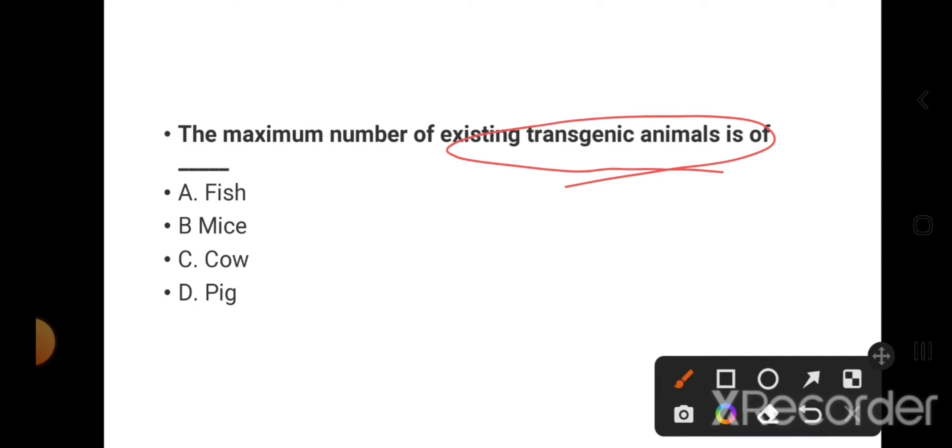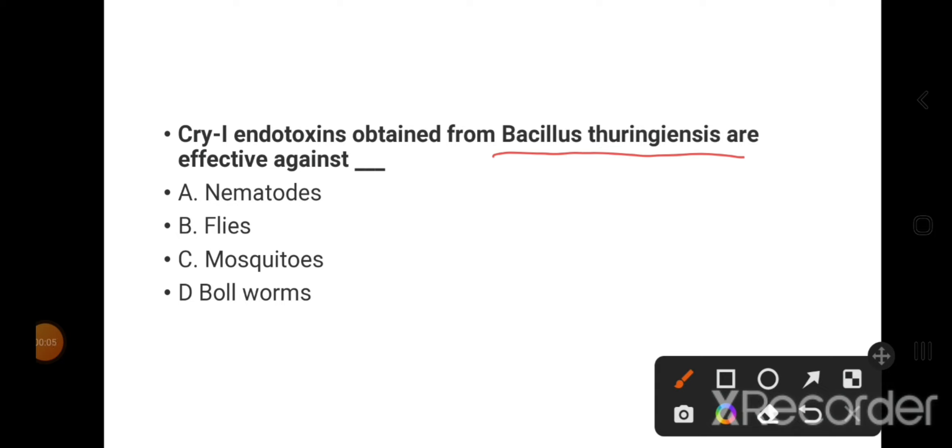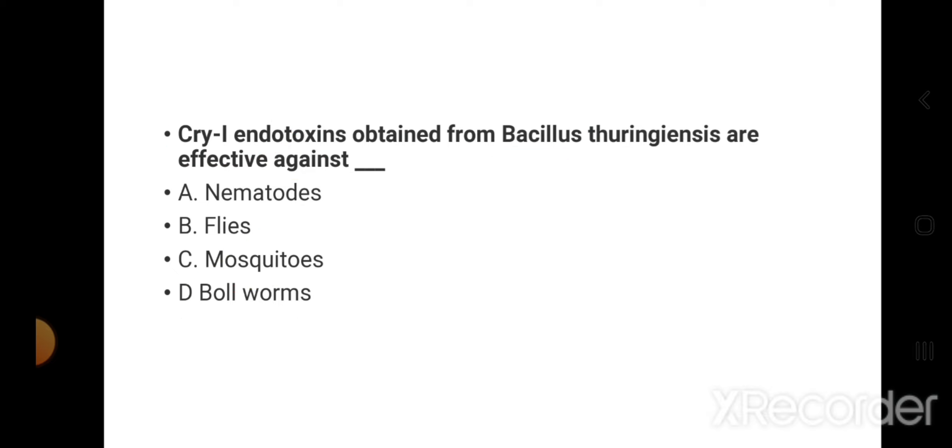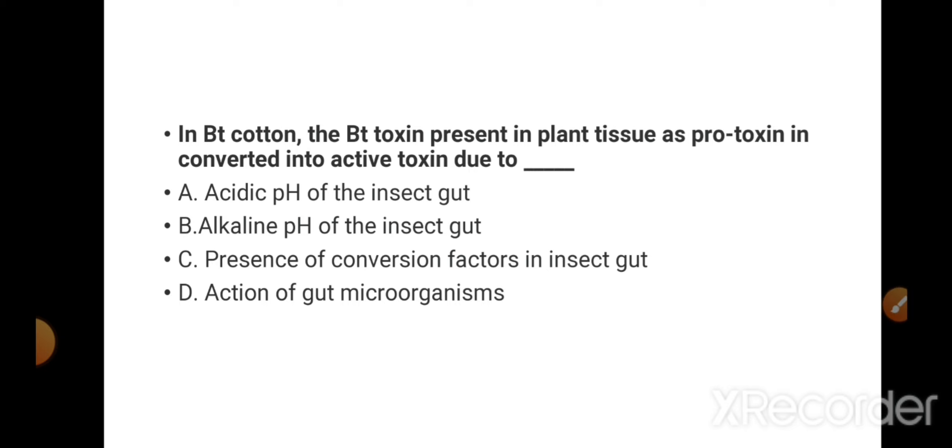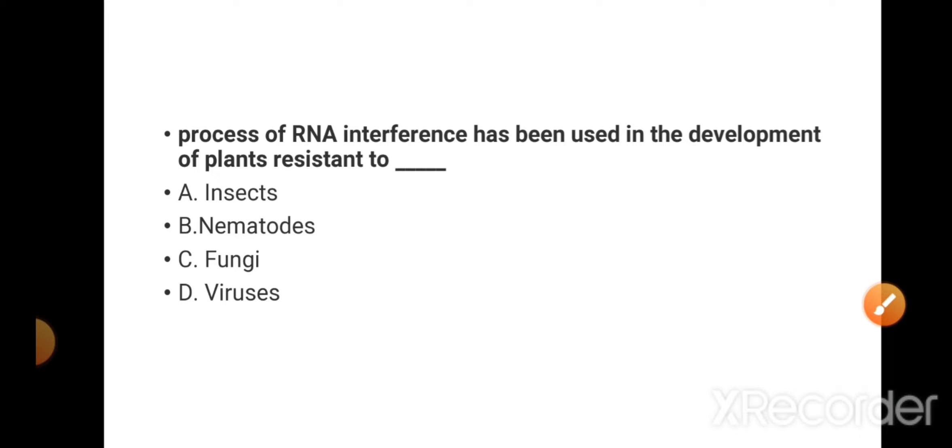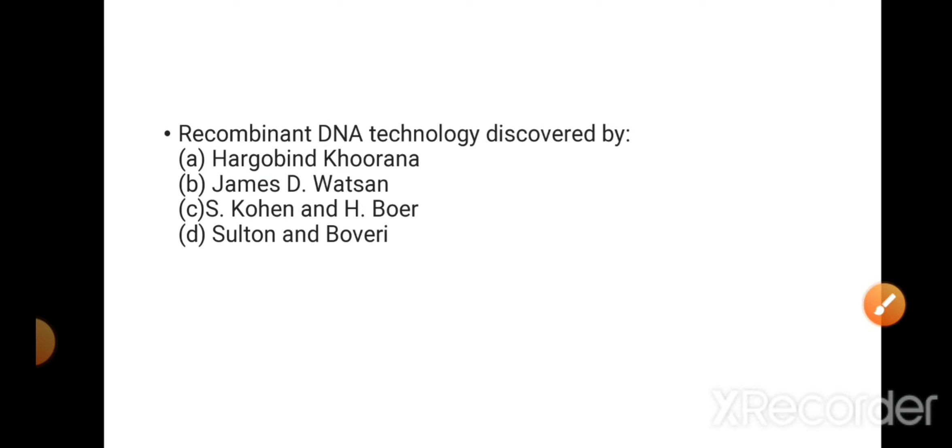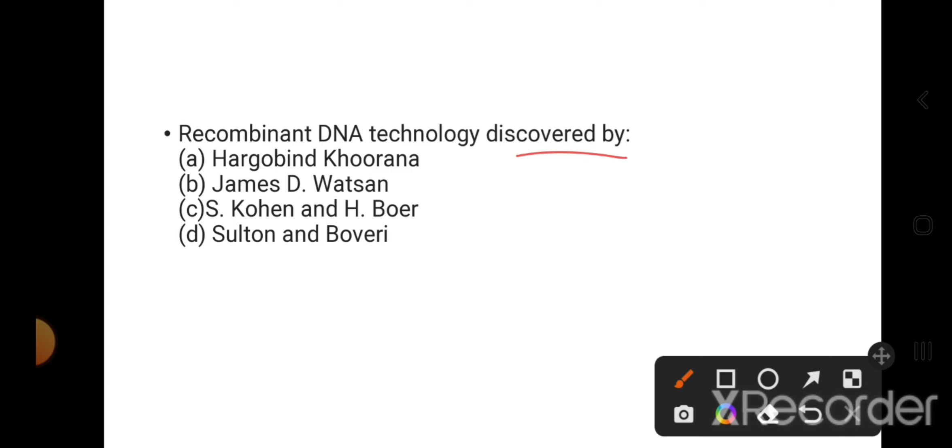The maximum number of existing transgenic animals is mice. Cry1 endotoxin obtained from Bacillus thuringiensis is effective against bollworms in BT cotton. BT toxin present in plant tissue as pro-toxin is converted into active toxin due to alkaline pH of the insect gut. The process of RNA interference has been used in development of plants resistant to nematodes, causing root knot disease in tobacco.